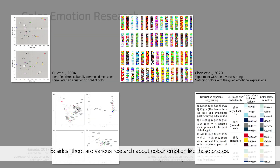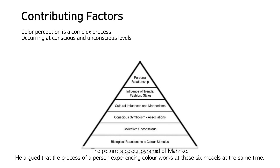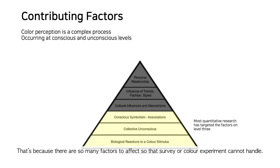Various researchers have tried to create models connecting color to words. However, what they missed is that color perception is a much more complex process. As shown in the color pyramid of Manke, he argued that the process of a person experiencing color works across six models simultaneously. In light of this pyramid, most color emotion studies remain in the three lower stages, because there are so many factors involved that surveys or color experiments cannot handle them all.